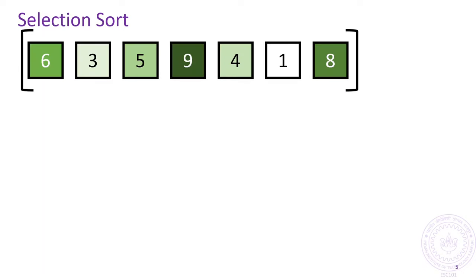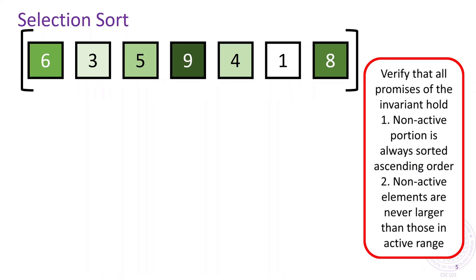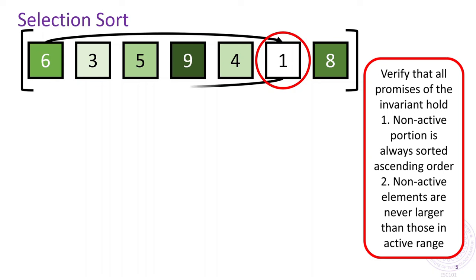Let's take an example to understand this algorithm better. Here, we have an array that is not sorted. We wish to use Selection Sort to turn it into a sorted array. Initially, the entire array is the active region. As we step through this algorithm, it would be nice if you could keep verifying if the promises of the invariants always hold or not. Let's start executing the algorithm. We select the smallest element in the active range — it happens to be 1 in this case — and bring it to the leftmost position of the active range using a swap.